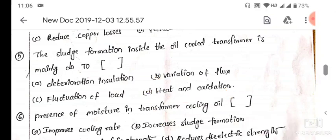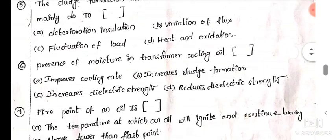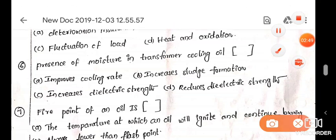Sixth question: presence of moisture in the transformer cooling oil. It improves cooling rate, increases sludge formation, increases the dielectric strength, or reduces the dielectric strength. The moisture reduces the dielectric strength.